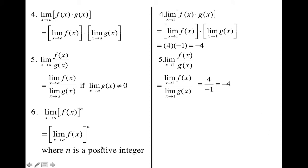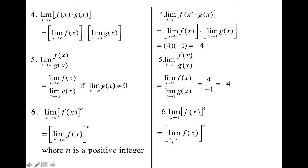The next one is the exponent property. If we have a function raised to some power where n is a positive integer — positive whole numbers — then you can distribute in the limit: take the limit of the inside first, then raise it to that exponent. So in this example, we take the limit as x approaches 1 of f of x cubed. Since we know the limit as x approaches 1 of f of x is 4, I can raise 4 to the third power to get 64.